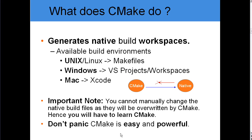An example: let's say we want to add files to our native environment — a header or a CPP. If we change our Visual Studio project and add the files there, the next time we run CMake our changes will be lost. Therefore, apply all your changes only to the CMake project.